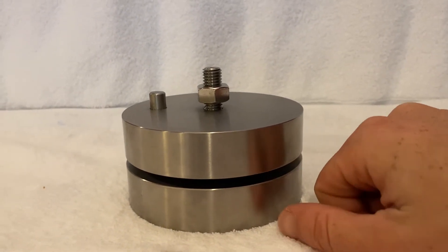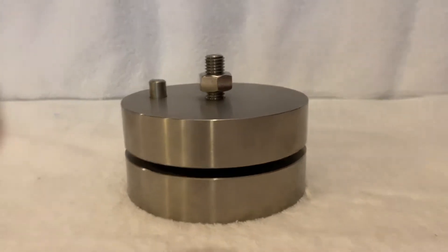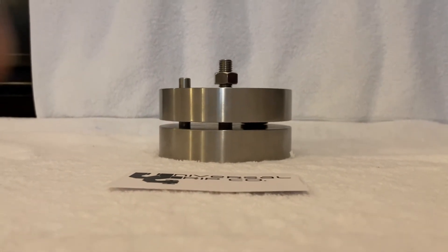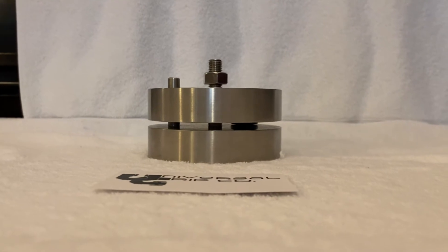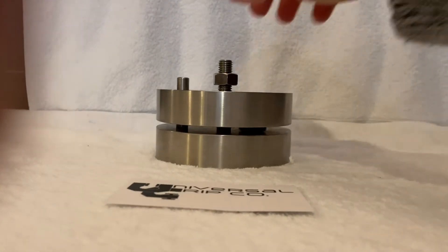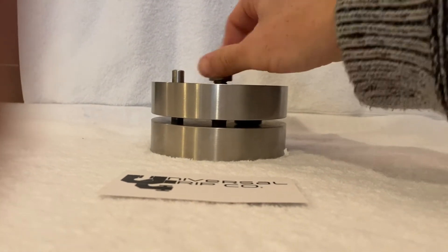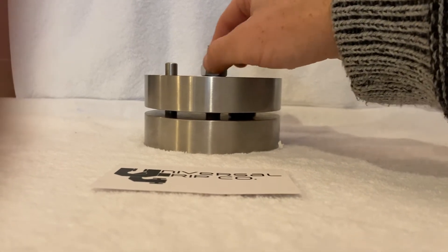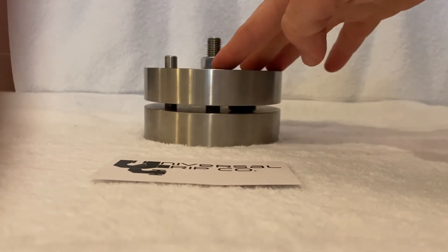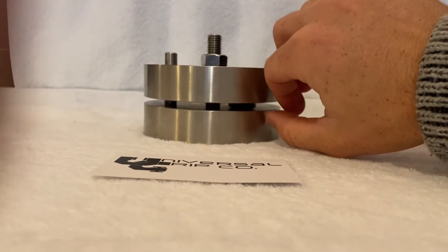The gauge block goes down in between there so you can see the sample resting. You then tighten this screw to the exact location and the spacers will stop it.